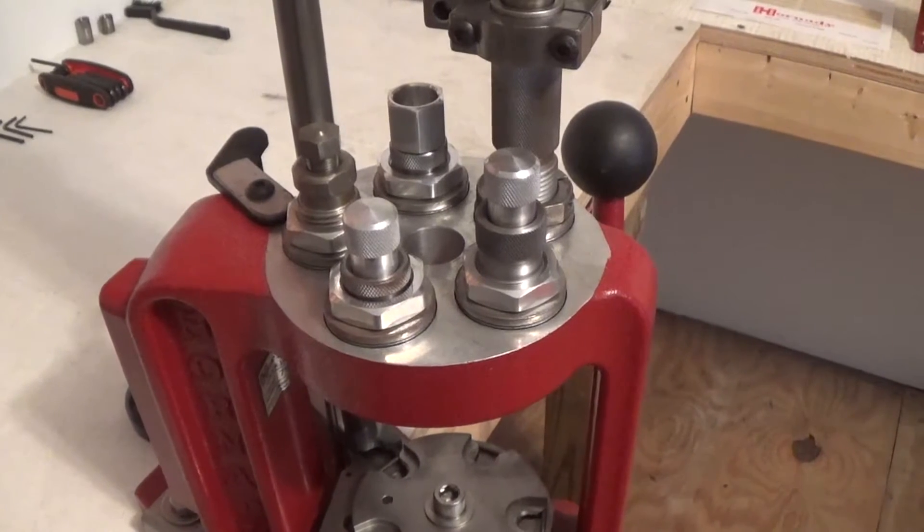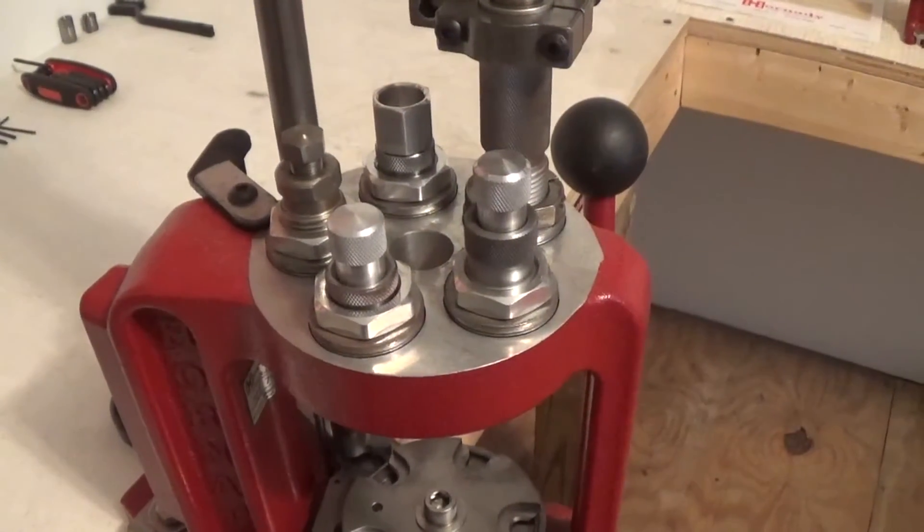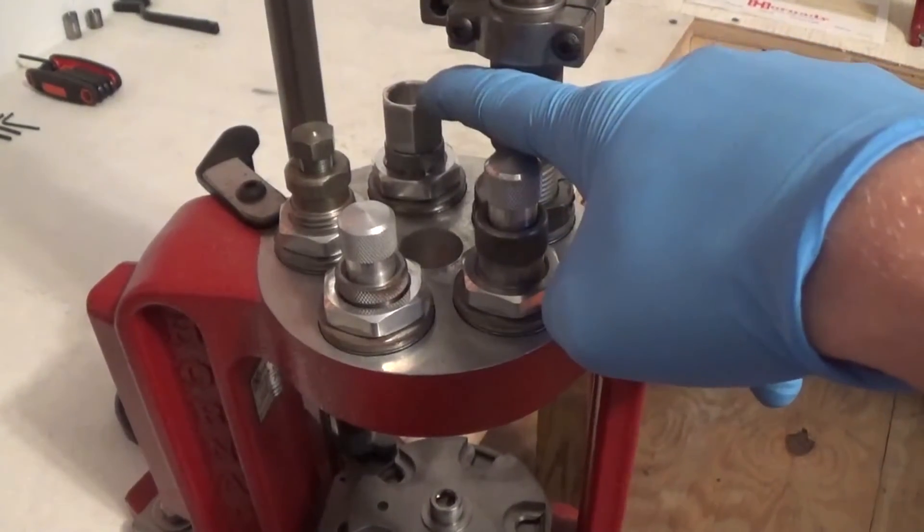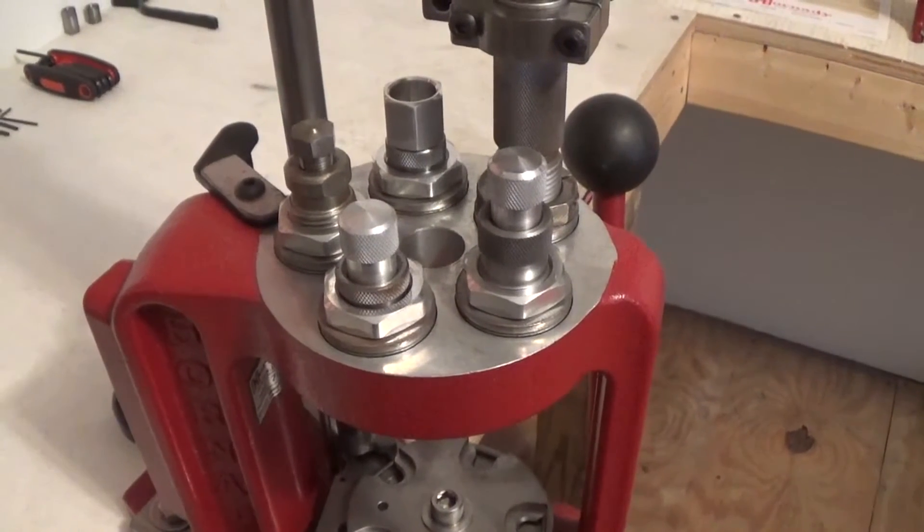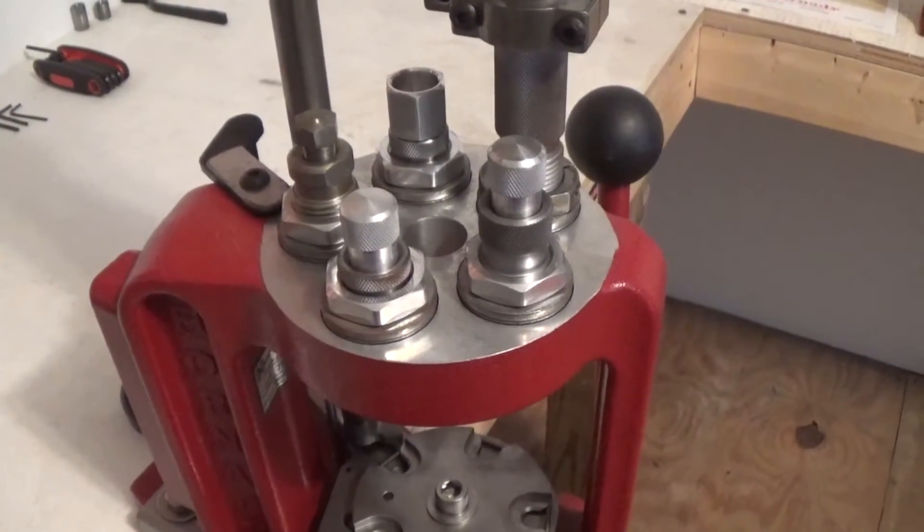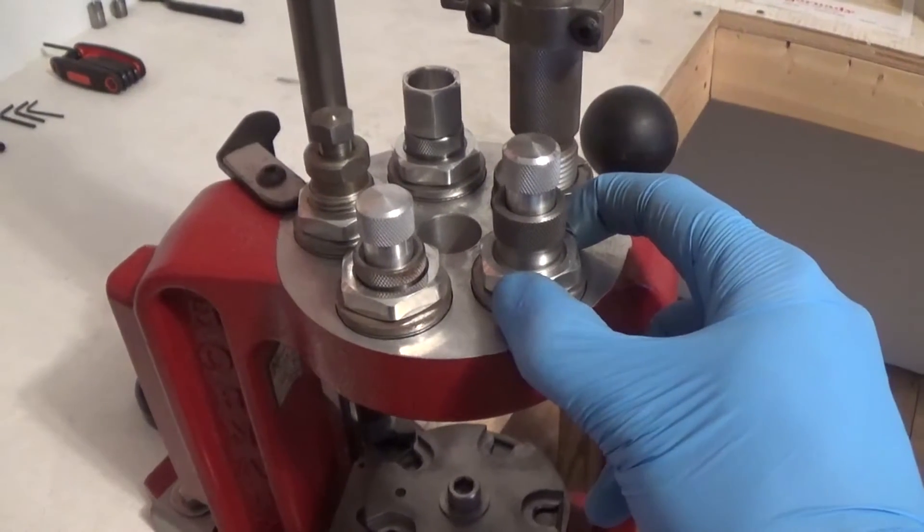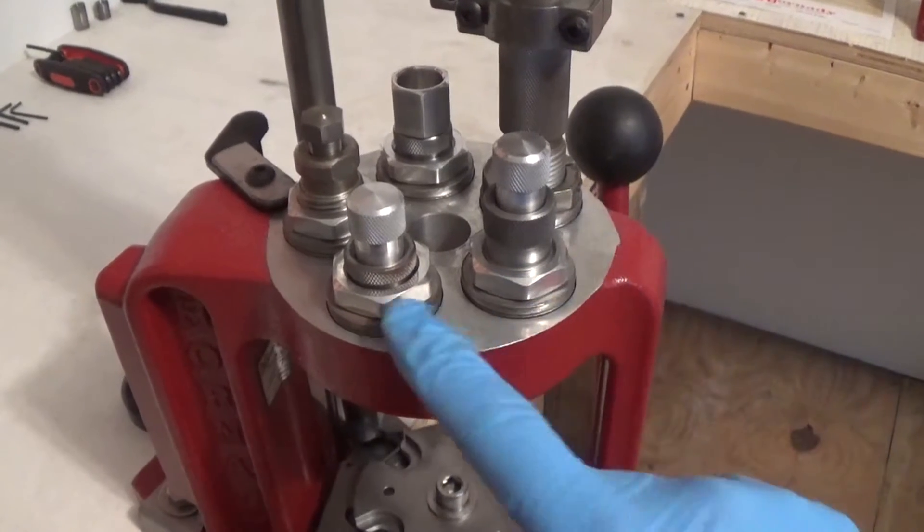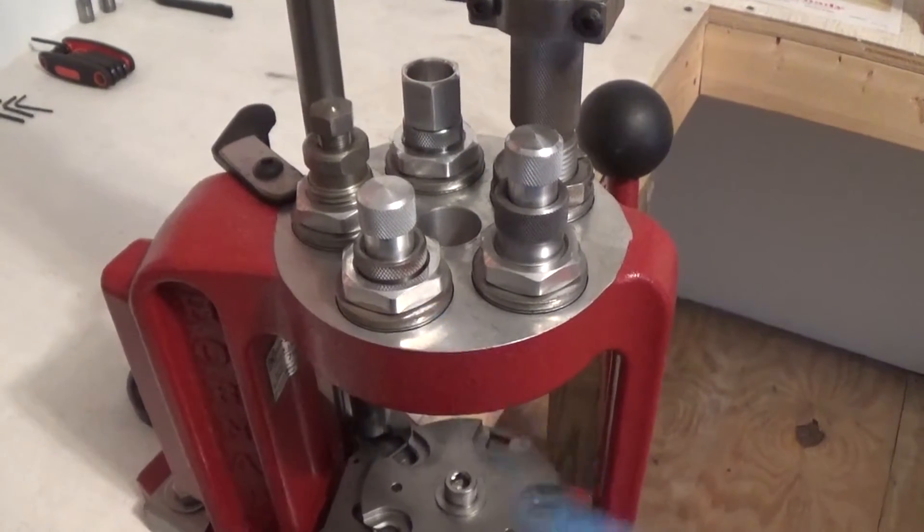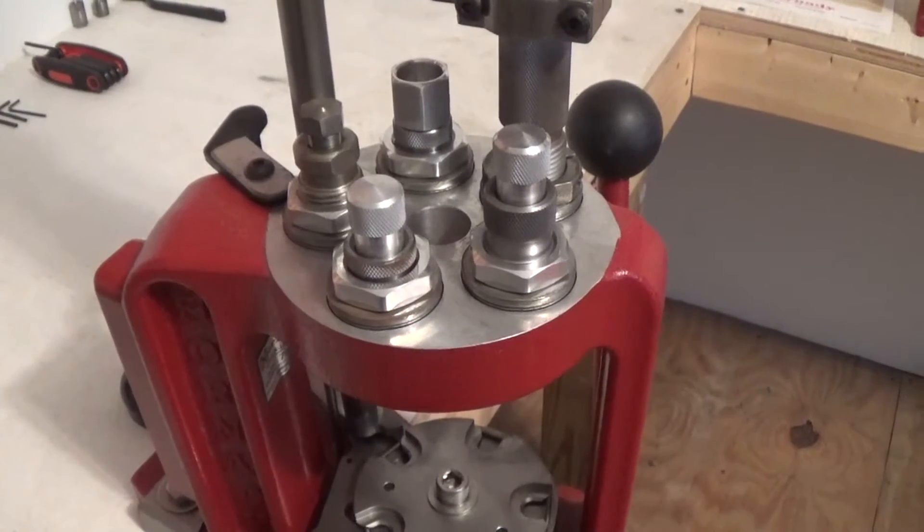Before we get to reloading, I want to go ahead and give you guys a good rundown on my die setup here. My first stage I have my resize decapping die. My second stage I have my expander. My third stage is going to go into my powder charger. My fourth stage has my bullet seeder die, and then my fifth and last stage is my factory crimp die. So now let's go ahead and get ready to start loading and get this show on the road.